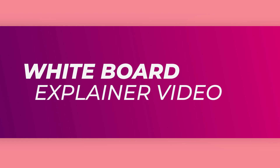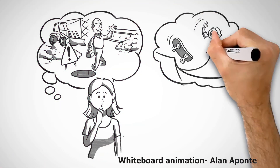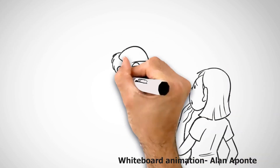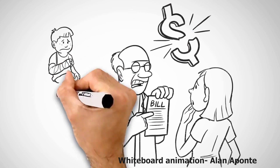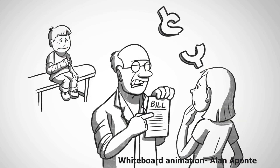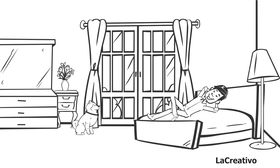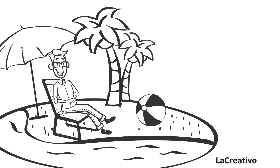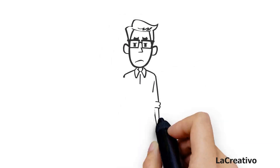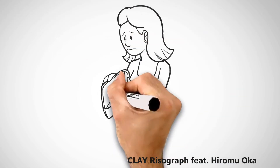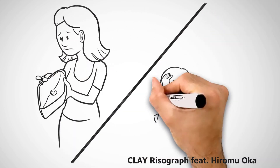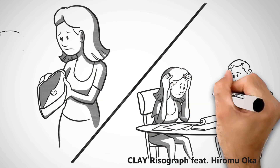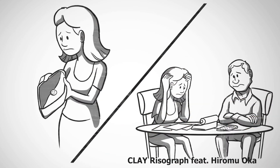Whiteboard animation is self-explanatory. On the screen is a whiteboard with characters and backgrounds being drawn to add action to the video. The process is quick — all images appear quickly and the story progresses without pause. Whiteboard explainer videos are both simple and entertaining to watch, and are notable for demonstrating the process of drawing static images or illustrations. The images help to build the story. Like other explainer videos, this type requires a voiceover to support the narration, and it is commonly used for e-learning.